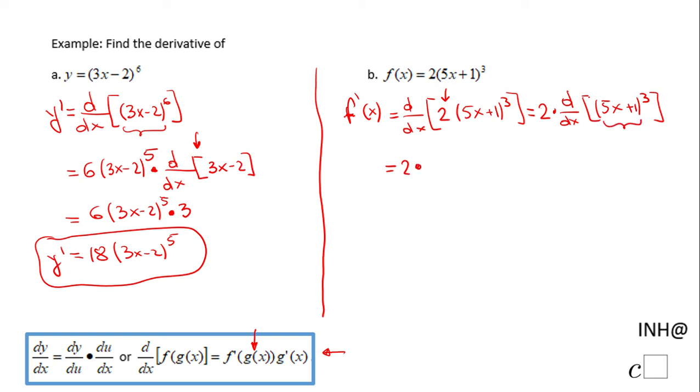And for this outside function, I'm going to have a 3—right, the exponent goes up front—times that expression (5x + 1), and then you subtract one from the exponent, so it's going to give you power of 2 here.